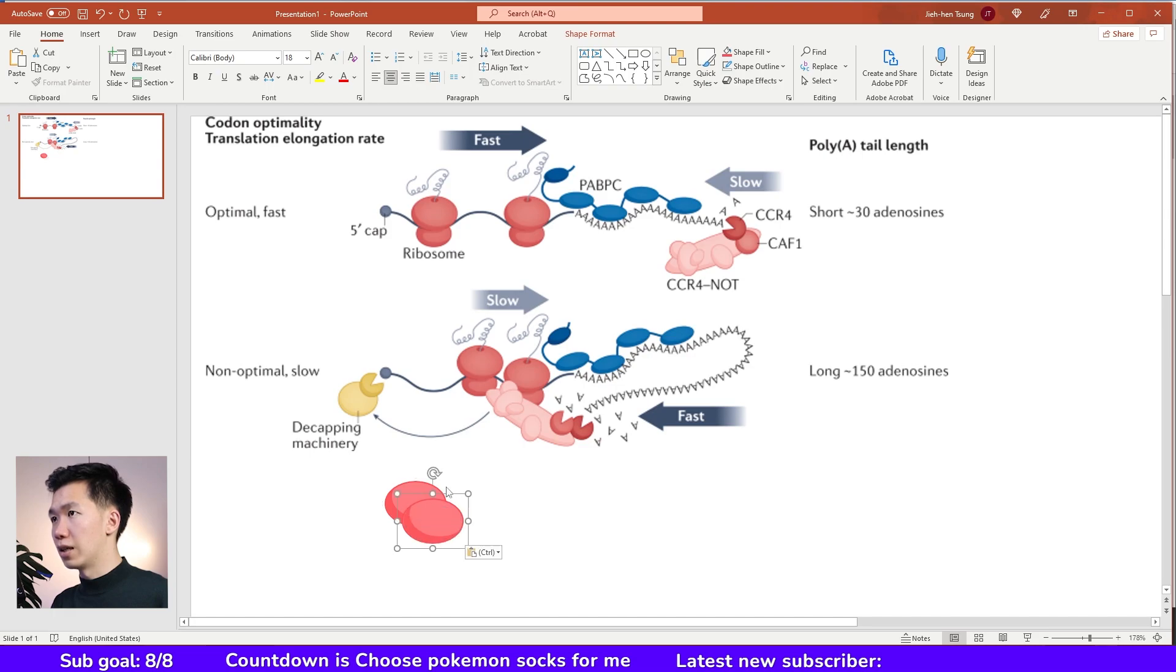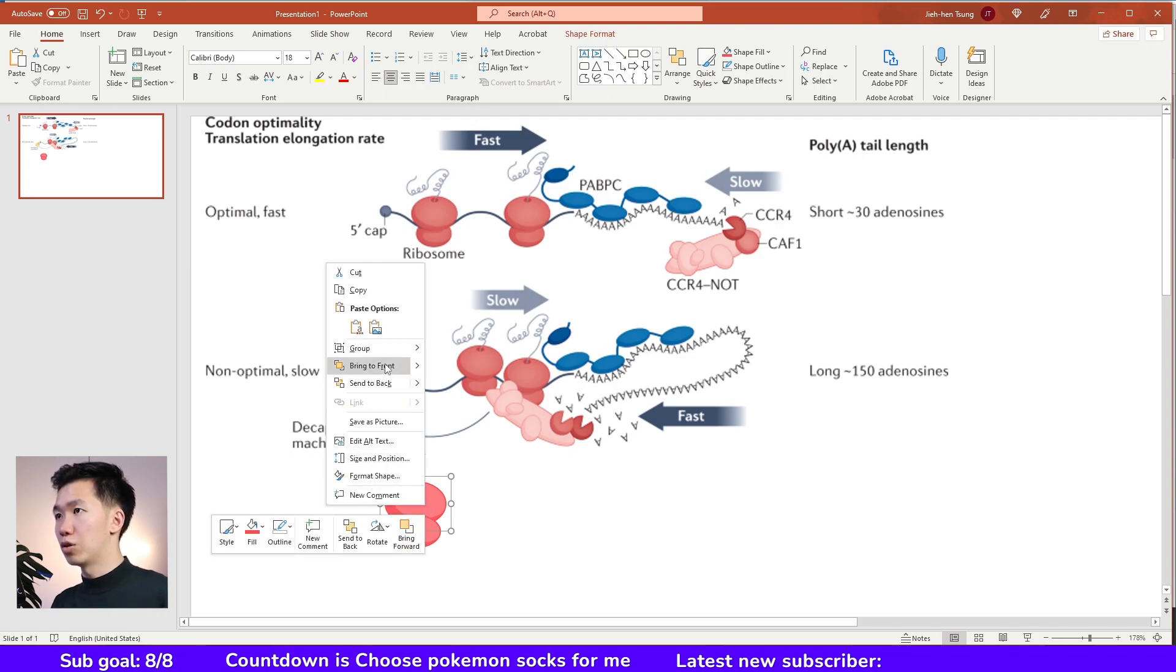I'll make a copy of it and then make it smaller. So this will be the small subunit of the ribosome. Then I bring the big subunit to the front.